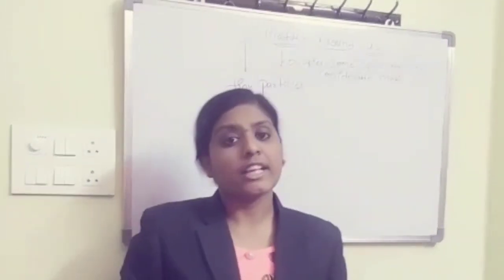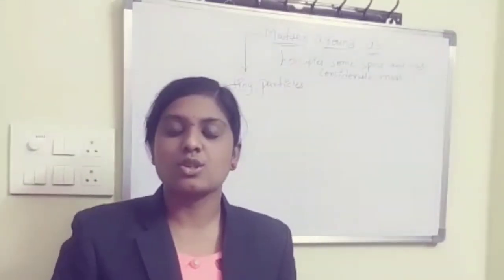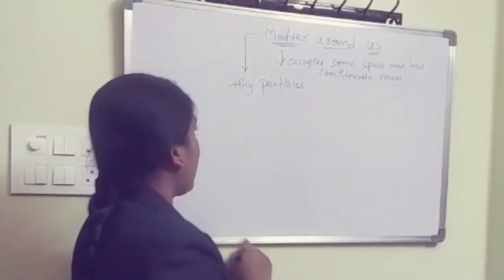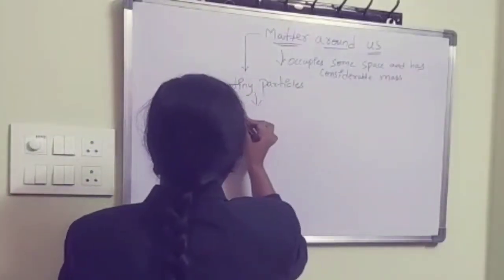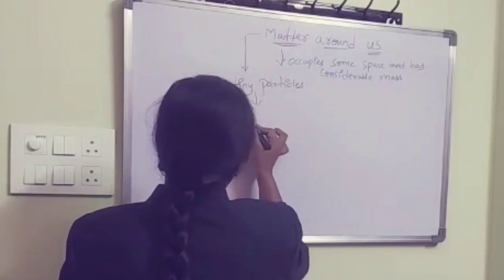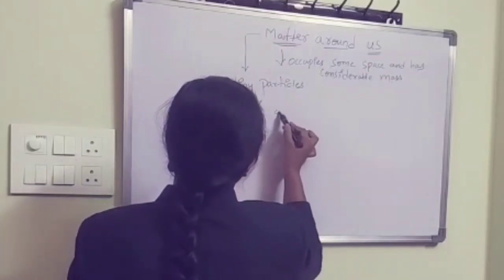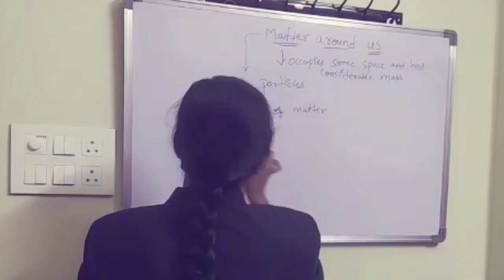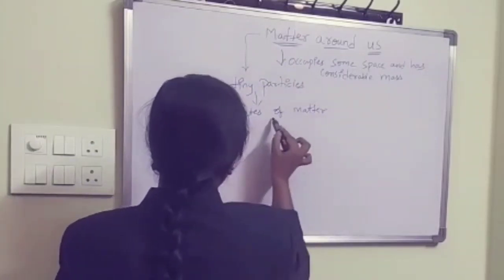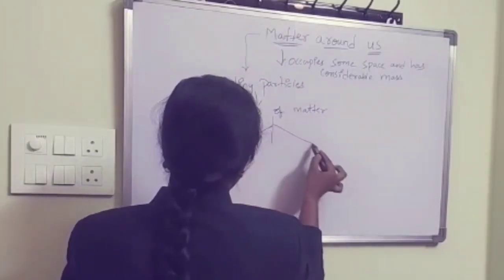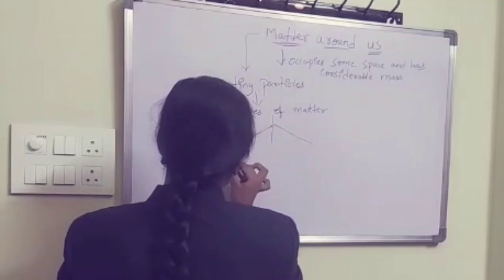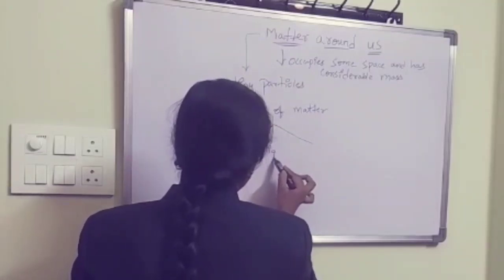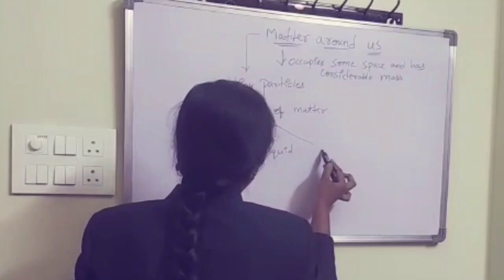Matter can exist in three states — solid, liquid, and gas. We have three states of matter: solid, liquid, and gas.